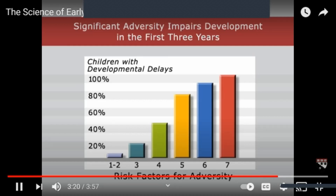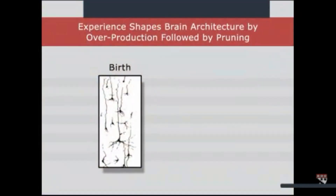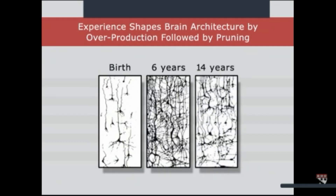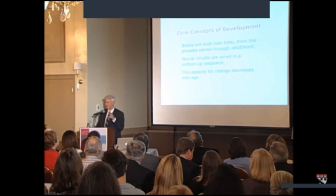Excessive prolonged stress early in life is associated with a higher prevalence later — not only of learning problems and behavior difficulties, but also physical and mental health problems. Because the brain is optimally flexible and plastic early in life, but as it develops and refines its circuitry it loses some of its flexibility, which is why intervening early is so important. When it comes to brain circuitry, it's better to get it right the first time than to try to fix it later.